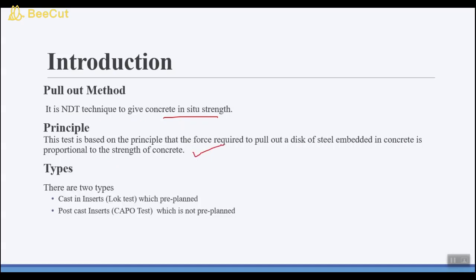Pullout method have types. First one is cast-in insert, also known as LOK test, which is a pre-planned activity, and the other one is post cast insert, also known as CAPO test, which is not a pre-planned activity. The one which we are going to demonstrate is cast-in insert.